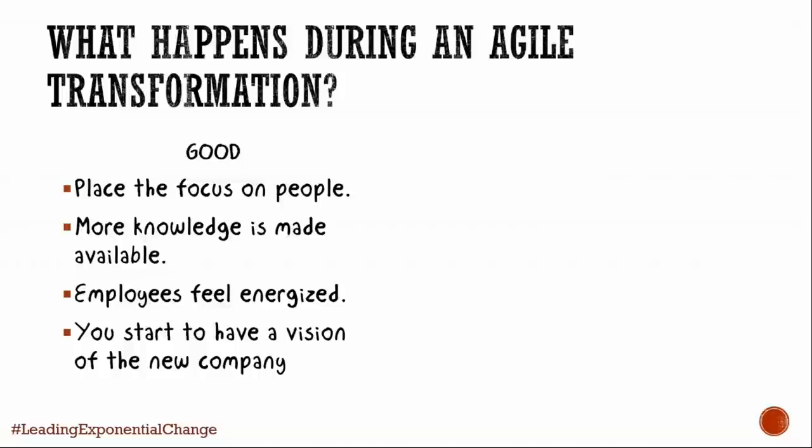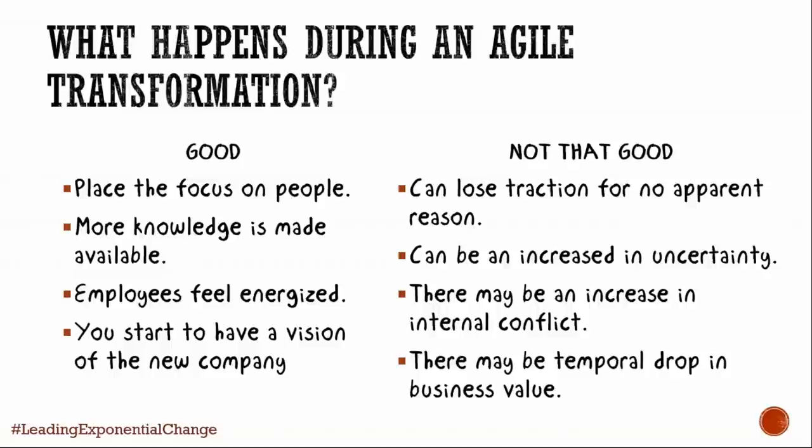With transformation, values in the company start changing — think of informal values, how you conduct yourself and connect with people. That leads to a new vision for the company and a reinvention. But there are also undocumented things: for some reason, at some point everything is working well, and then for some reason that change or transformation loses traction and you have no idea why it's happening.